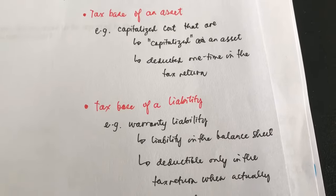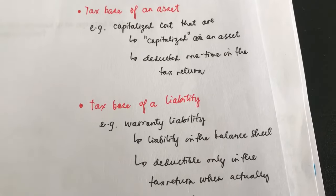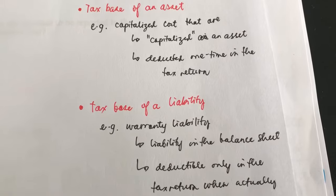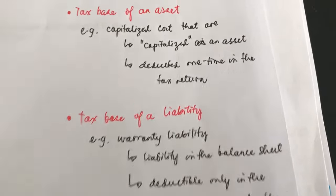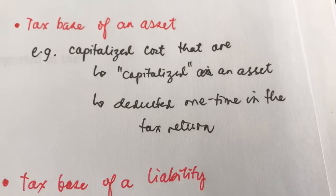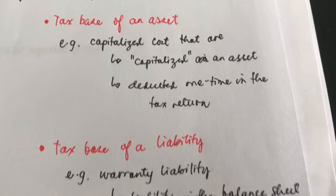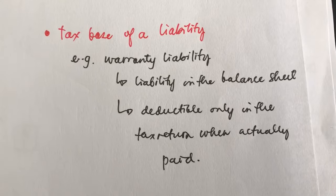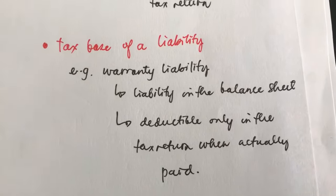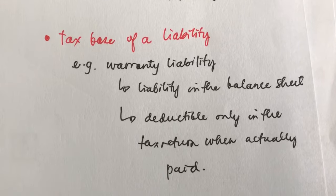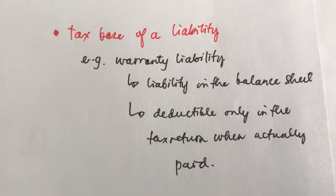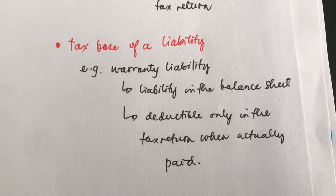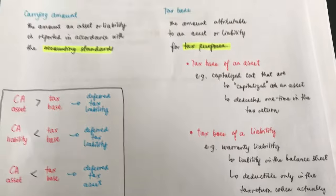For example, software development costs are capitalized as an intangible asset in accounting, but for tax purposes, the amount spent is deducted one time in the tax return — so they differ. For liabilities, take warranty liability: it appears as a liability in the balance sheet, but for tax purposes, it is only deductible when actually paid by the company. So the tax base differs from the carrying amount.